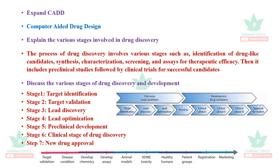The next exam question is: what are the various stages involved in drug discovery? There are different stages such as identification of druggable candidates, their synthesis, characterization, screening, and appropriate assays to measure therapeutic efficacy. It then includes pre-clinical studies — which may be cell line studies, isolated tissue experiments, or in vivo animal models — followed by clinical trials for successful candidates.